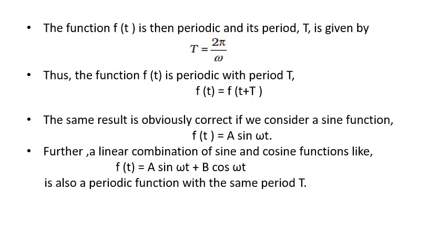The function f is then periodic and its period T is given by T equals 2π by omega. Thus the function f(t) is periodic with period capital T, and will be denoted by function of t equals function of t plus T.